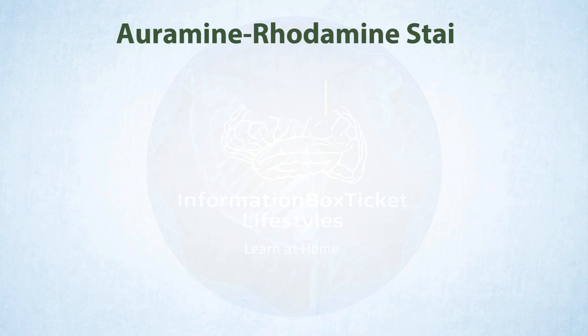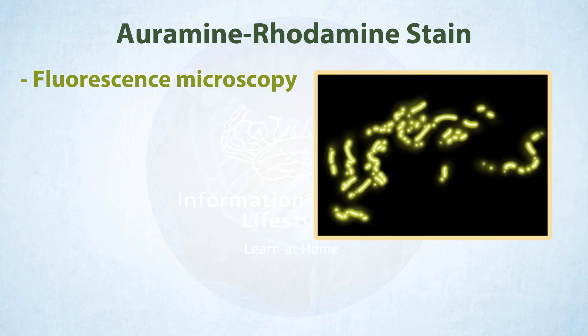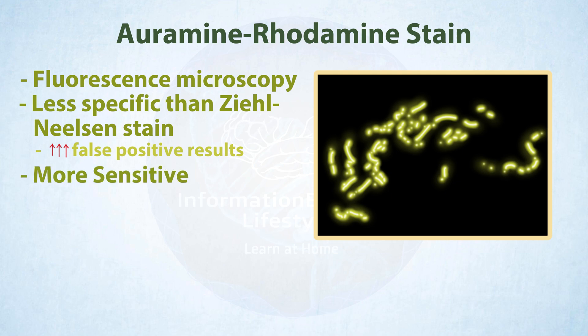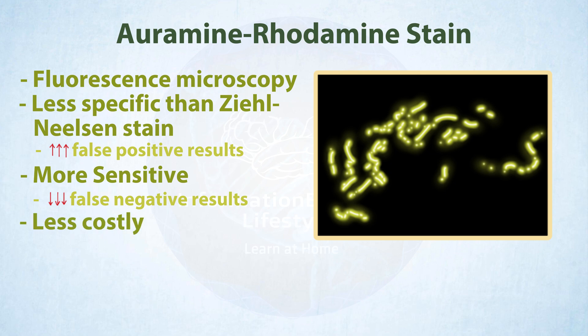Auramine-rhodamine dye may also be used in fluorescence microscopy to visualize Nocardia, which produces a reddish-yellow glow. This stain is less specific than the Ziehl-Neelsen stain, thus it produces more false positive findings. Nevertheless, it is more sensitive, producing fewer false negative results, and it is also less costly. As a result, the auramine-rhodamine stain is frequently utilized during screening.